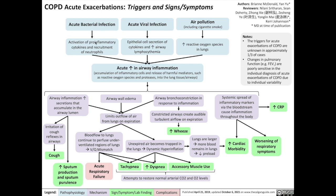Acute bacterial infection activates pro-inflammatory cytokines and recruits neutrophils to the area of infection. Acute viral infections cause epithelial cells to secrete cytokines and increase airway lymphocythemia, meaning a greater number of lymphocytes recruited to the area of infection in the airways. Air pollution such as cigarette smoke will increase reactive oxygen species in the lungs.